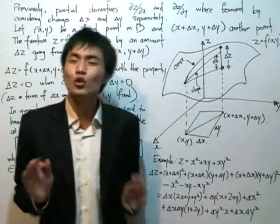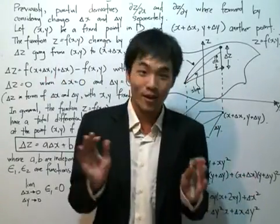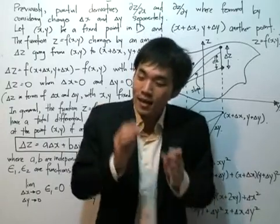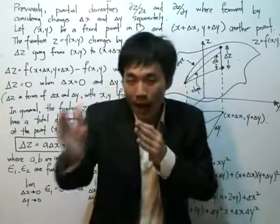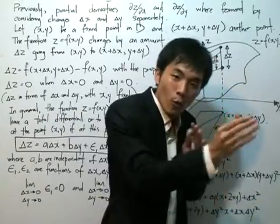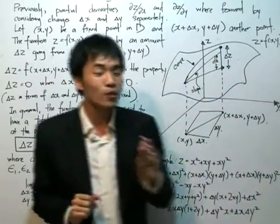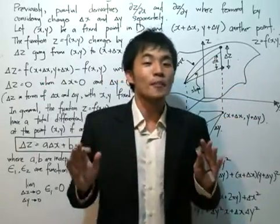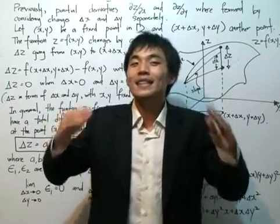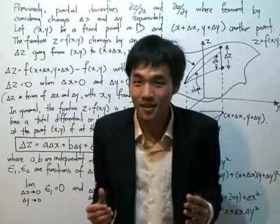We have something new called the total differential. Previously we held y fixed and varied x, or held x fixed and varied y. But now the total differential is when we vary both x and y together, and let's see what we can say to describe this process.